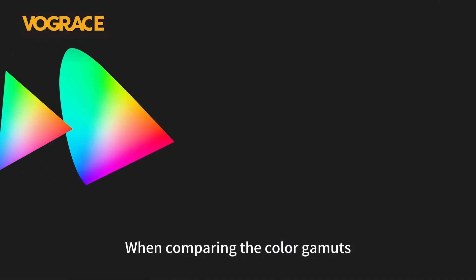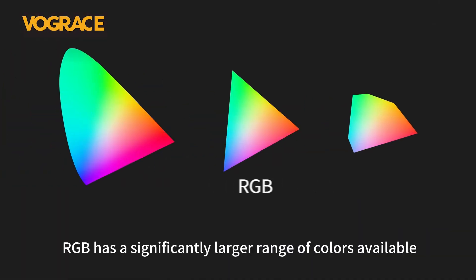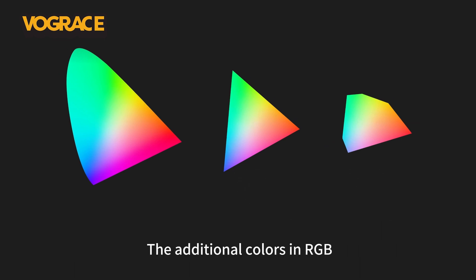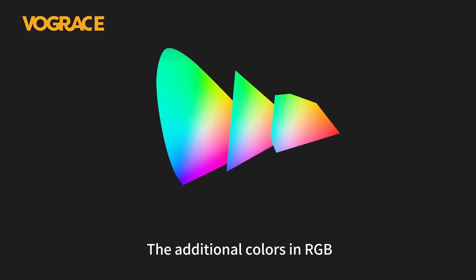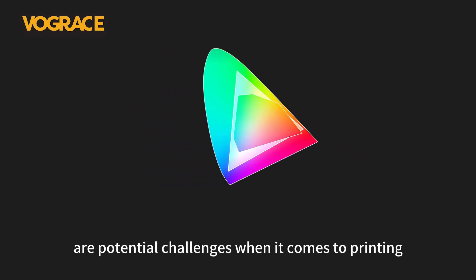When comparing the color gamuts within the same color space, RGB has a significantly larger range of colors available compared to CMYK. The additional colors in RGB beyond what CMYK can reproduce are potential challenges when it comes to printing.